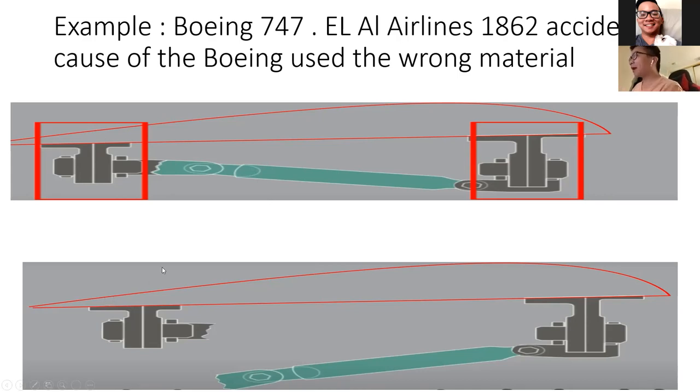But somehow they used the wrong material for the rear connection part in the middle, which was not strong enough. The pylon broke, leading to the engines falling down. The airplane basically lost two engines on one side of the aircraft, leading to the accident.